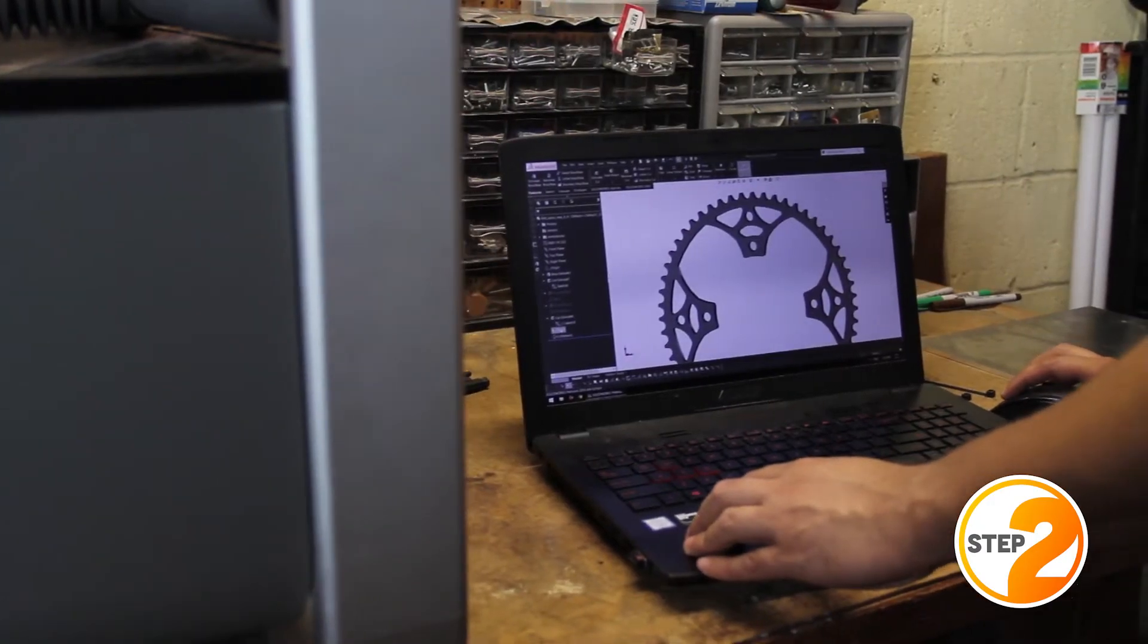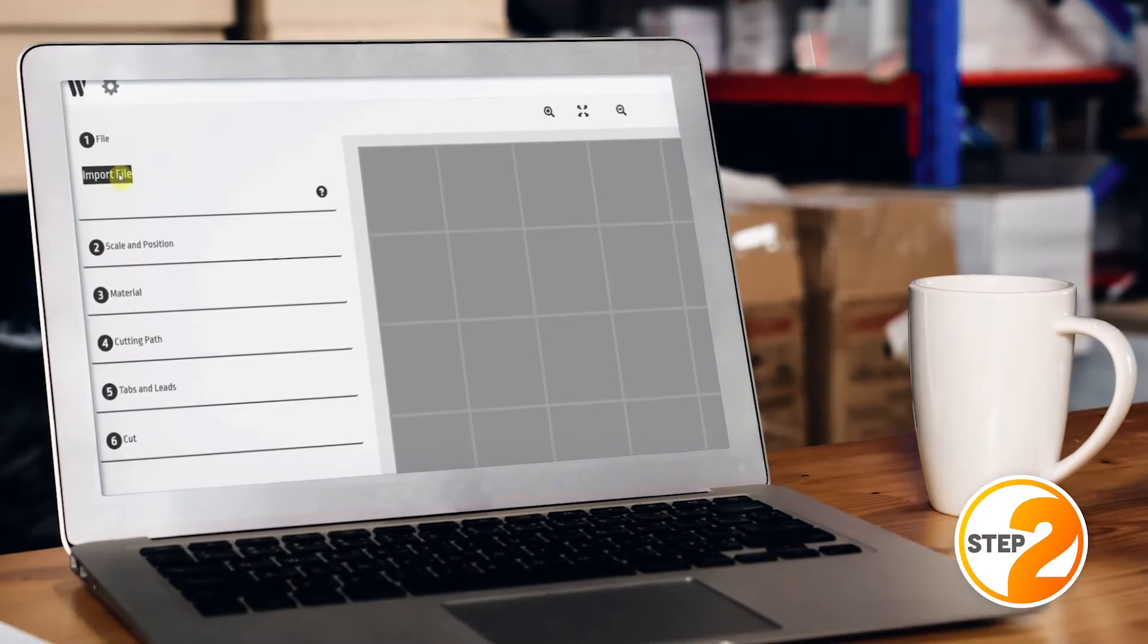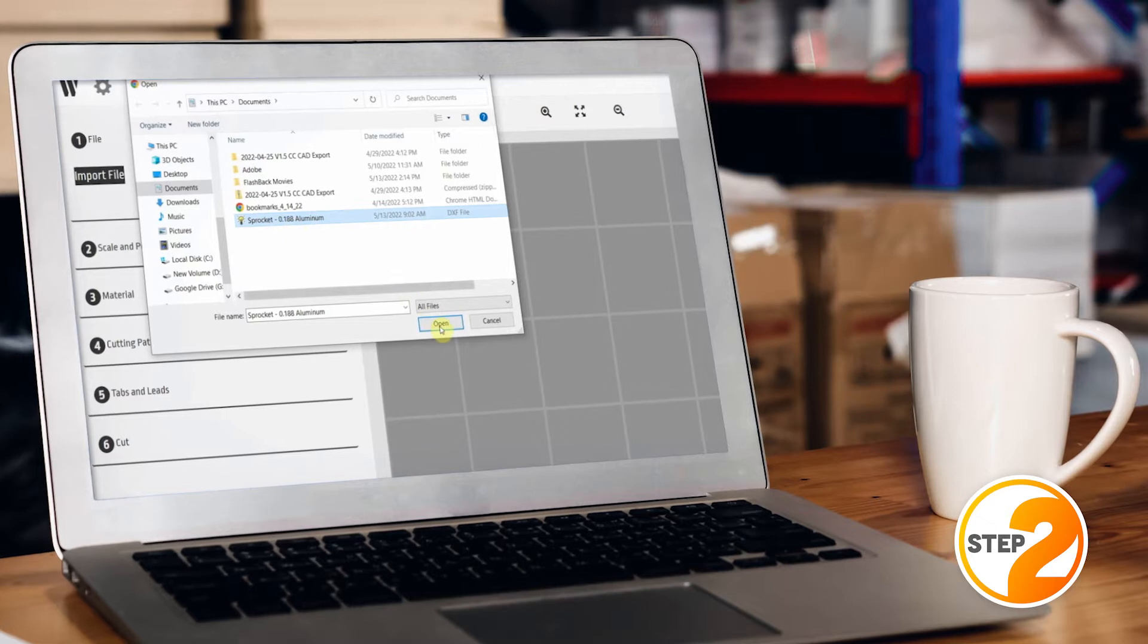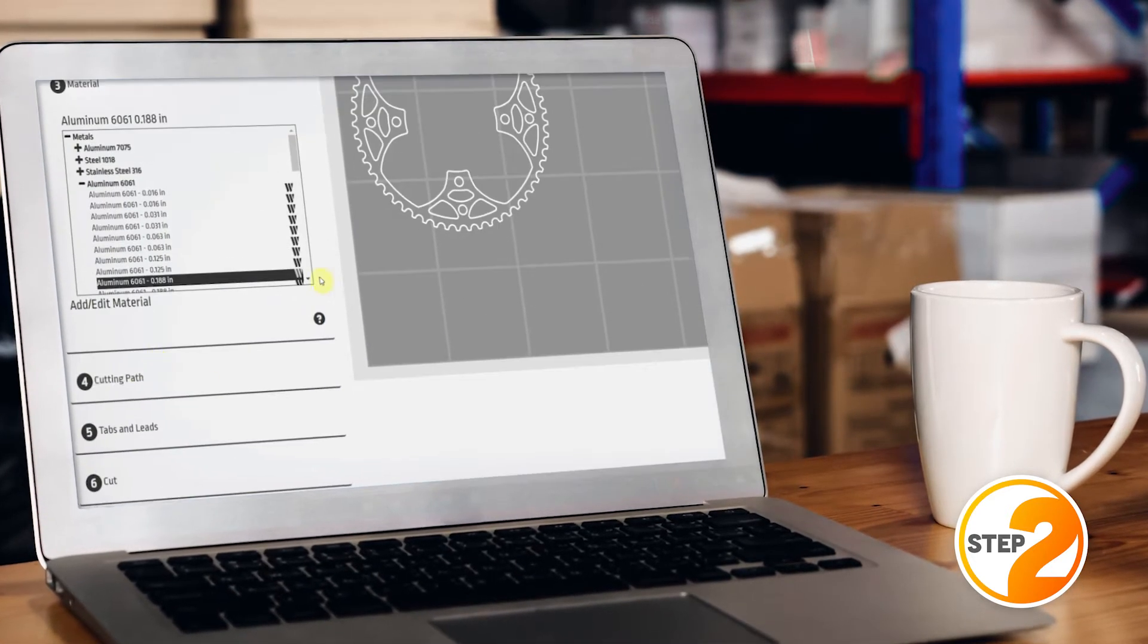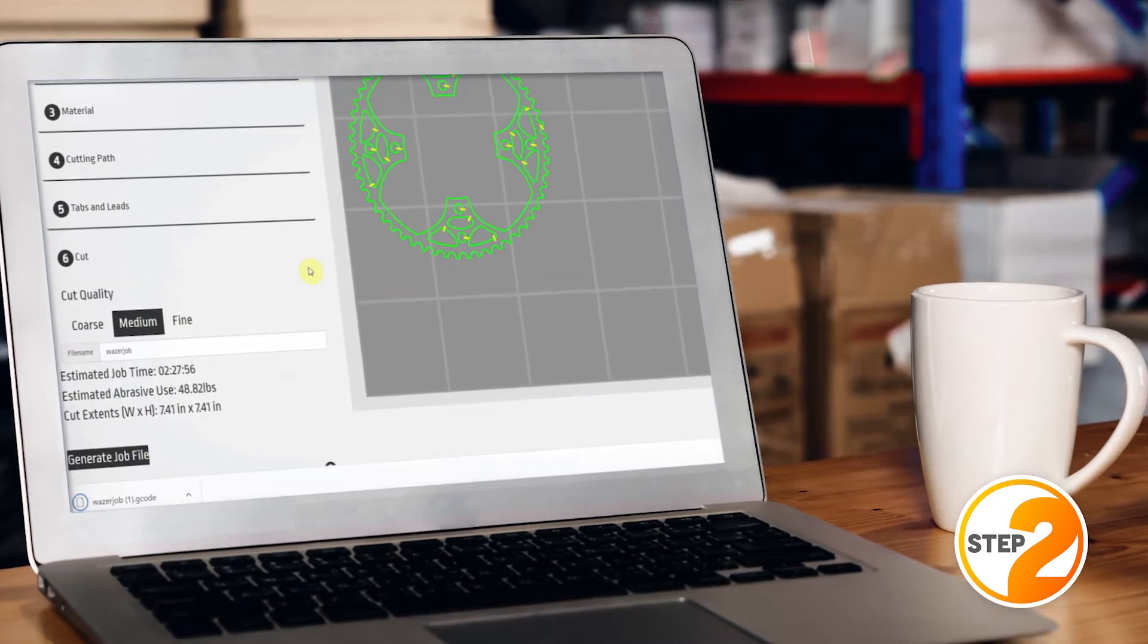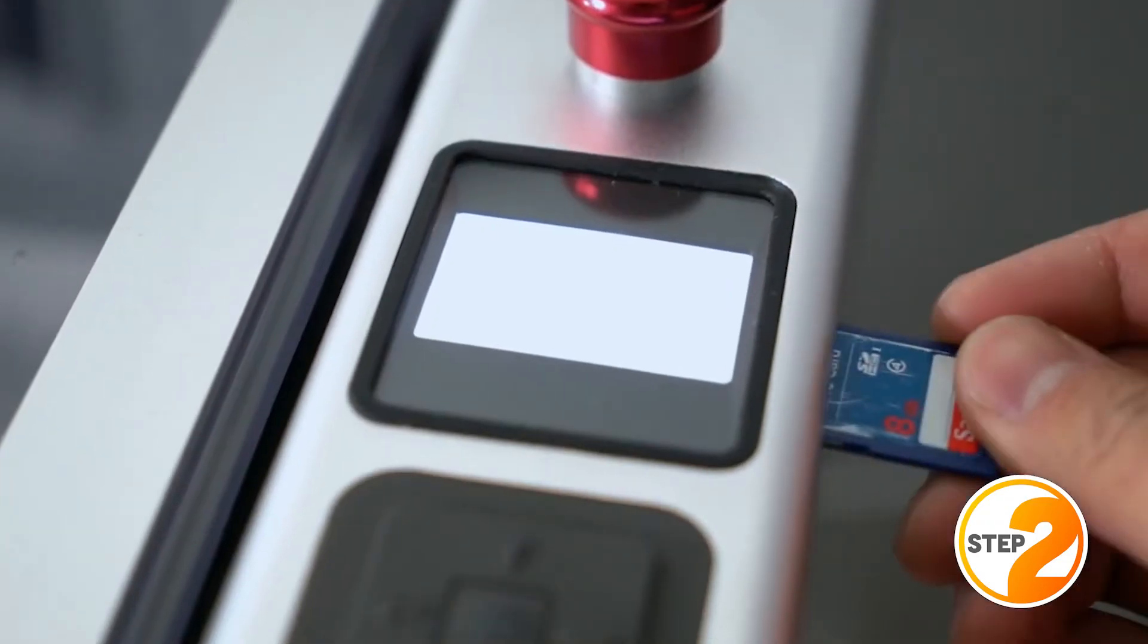Step 2 is the digital side. This involves setting up your design for cutting. Load your DXF or SVG design into the included WAM cutting software and choose from the menu what material and cutting options you require. Then transfer the resulting G-code file to the Wazer using an SD card. It's that simple.